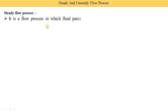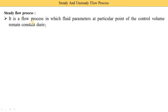Now let's understand this definition in detail. It is a flow process in which fluid parameters at a particular point of the control volume remain constant during the entire process. It is applied to an open system where something is flowing. The parameters — temperature, pressure, velocity, and density — are not changed with respect to time during the entire process.